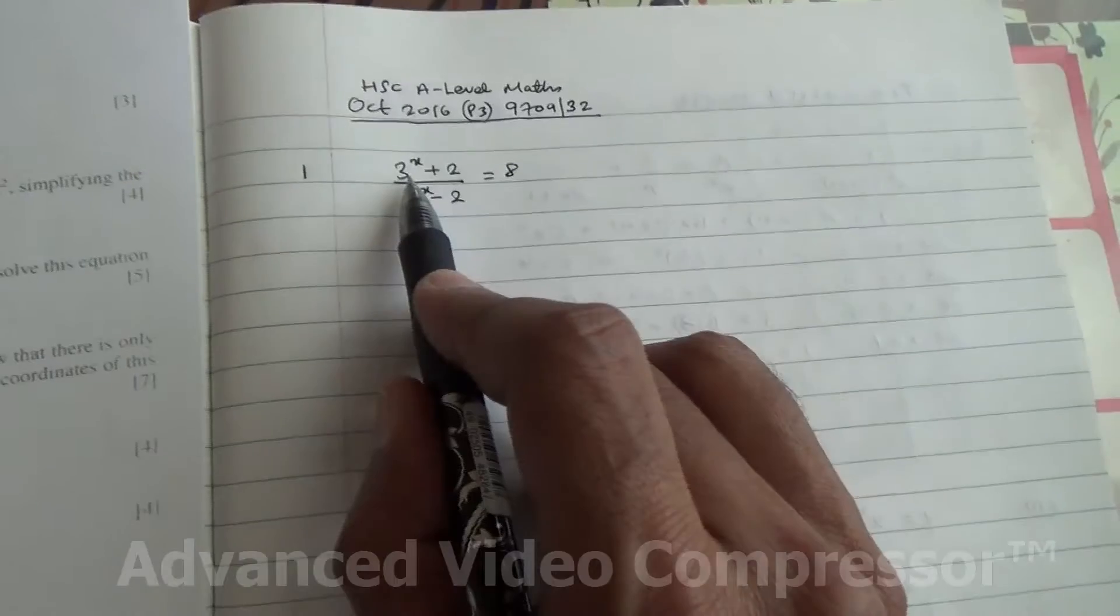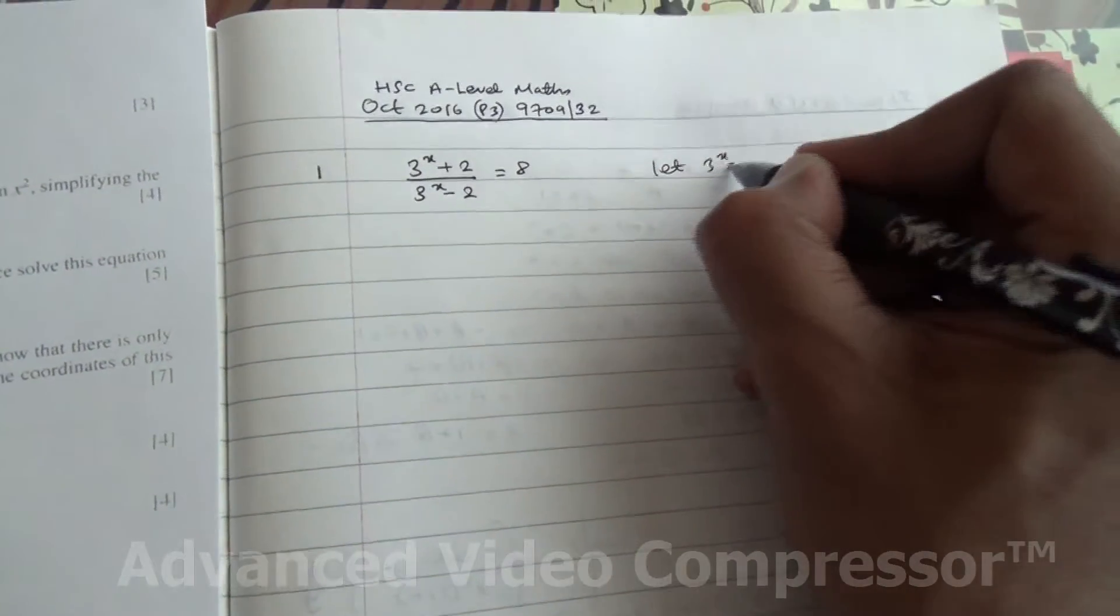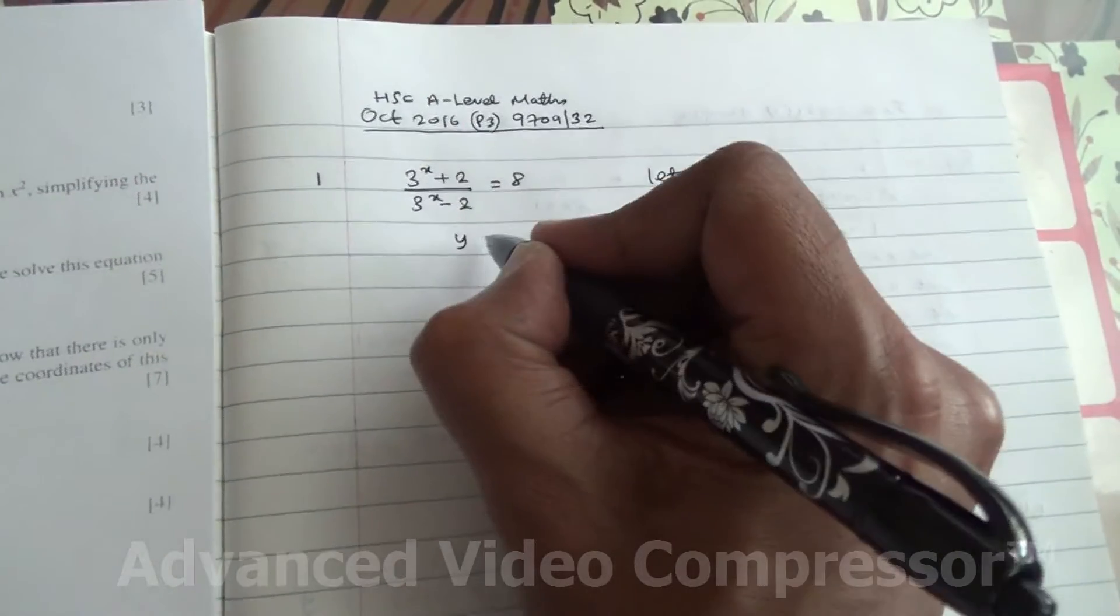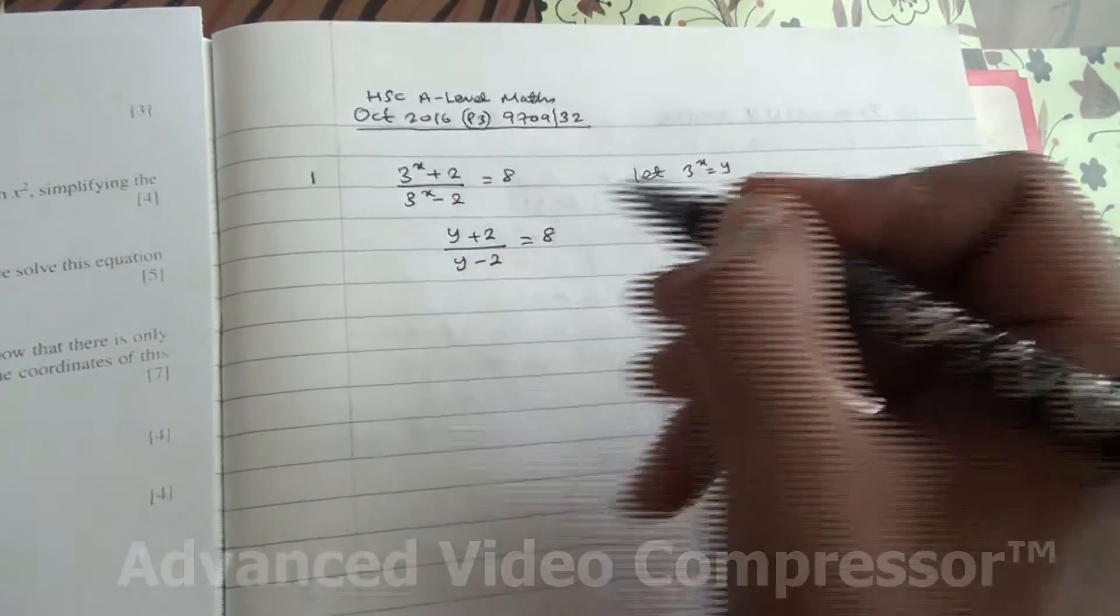So for a question like this, we're going to replace 3 to the power of x. Let 3 to the power of x is equal to y. So then we have y plus 2 divided by y minus 2 is equal to 8.